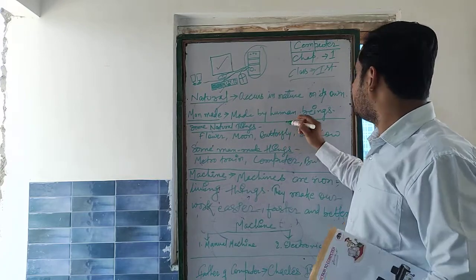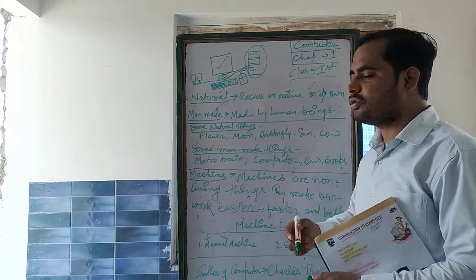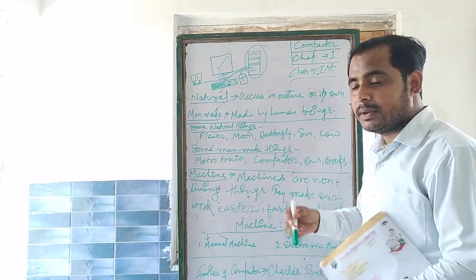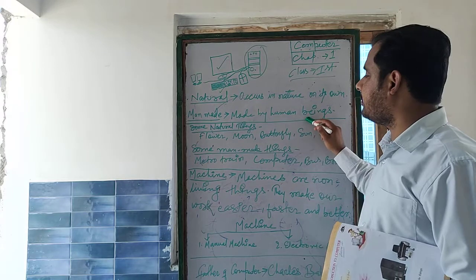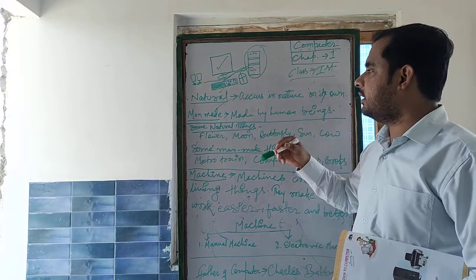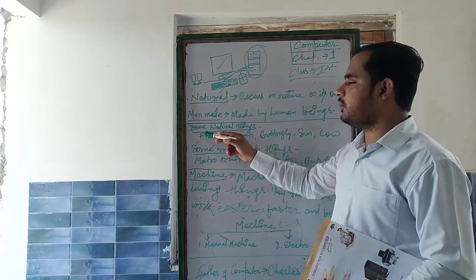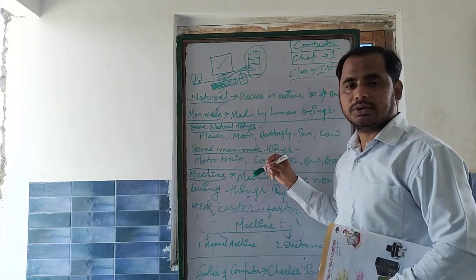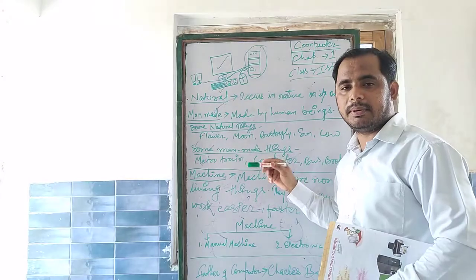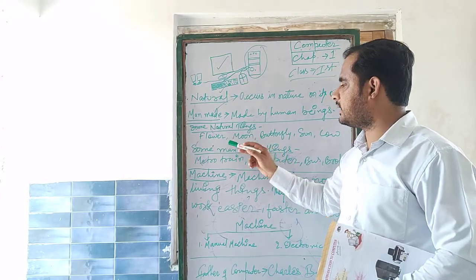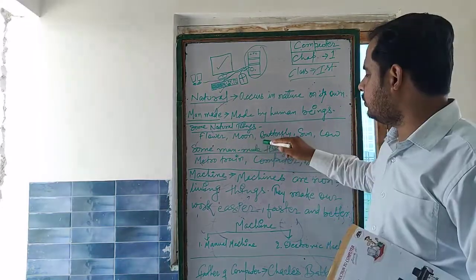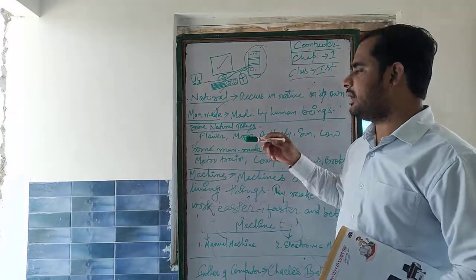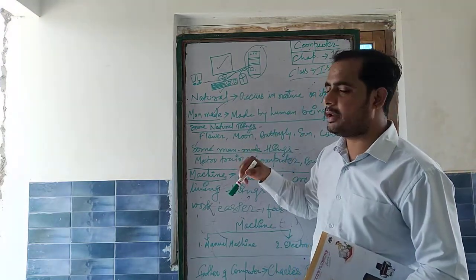What is natural and what is manmade? Manmade means made by human beings. What are some natural things? Natural things include flower, moon, butterfly, sun, and cow. What is the name of manmade things?